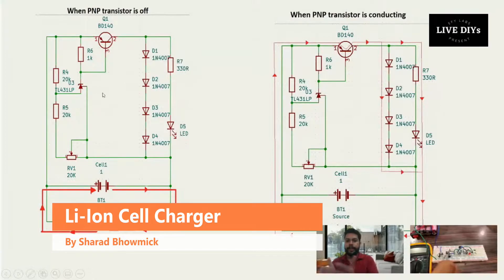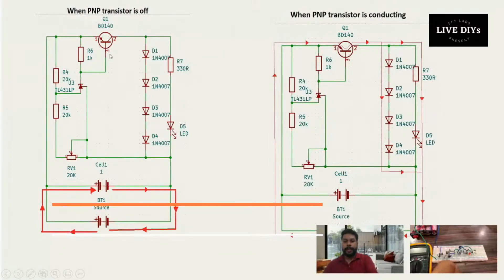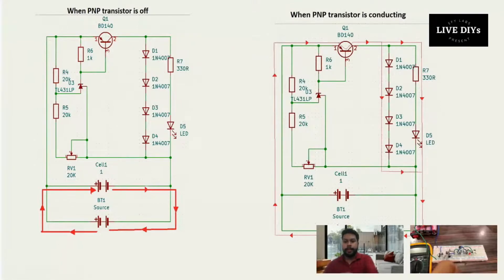First I will consider the left circuit. In the case when the PNP transistor is off, which is basically controlled by a zener diode which is depicted here by TL431, we have BD140 at the top with which 4 diodes are connected in series.